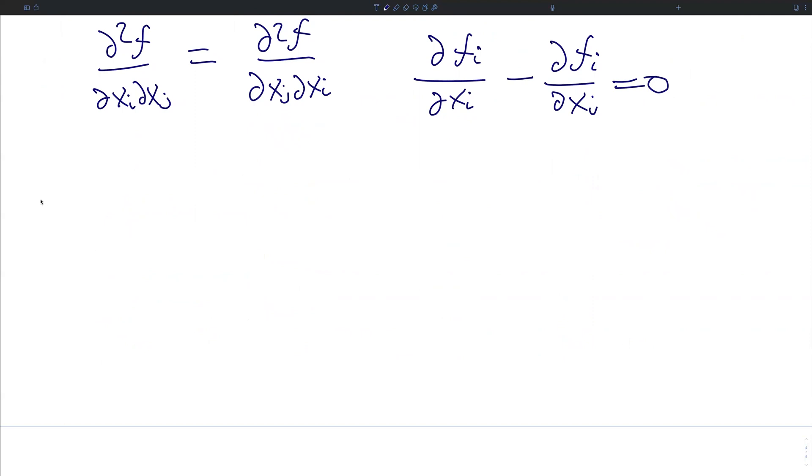If we have a K form alpha and an L form beta, then the wedge product alpha wedge beta is going to be a K plus L form. So much in the way that the outer product we've been using in our tensor operations is dimensionality adding, so too is this wedge product.